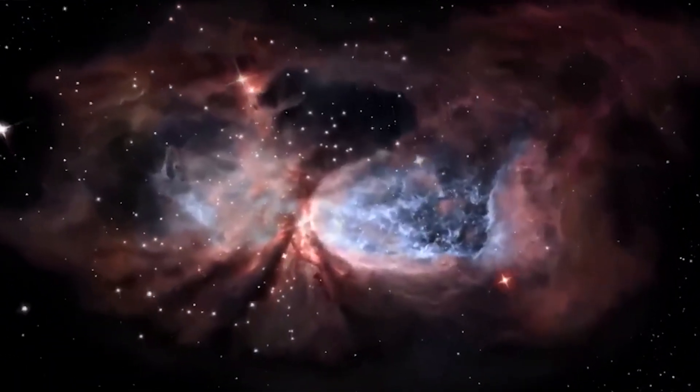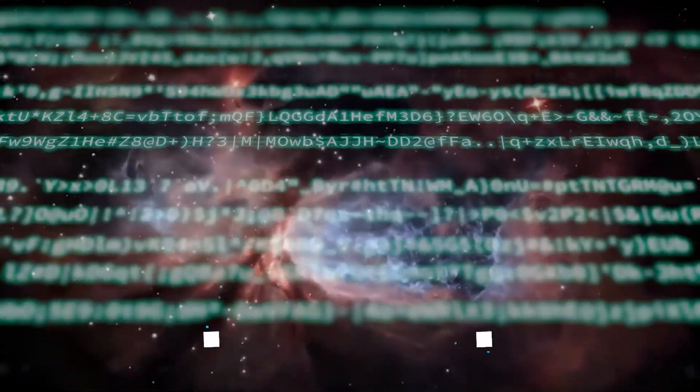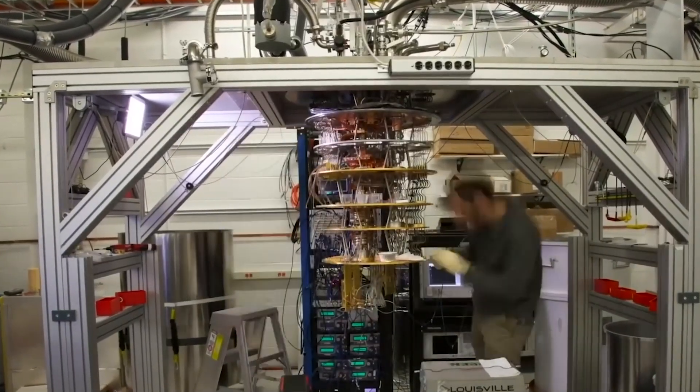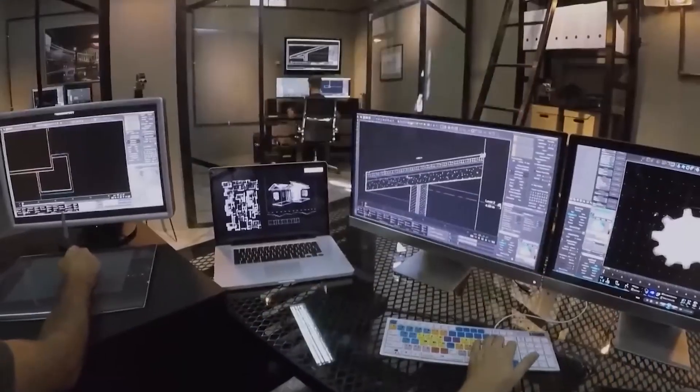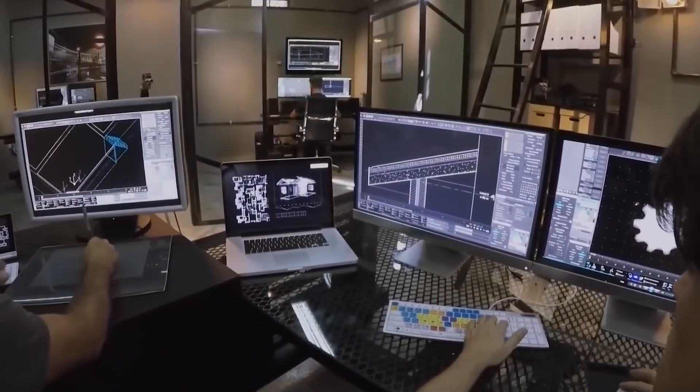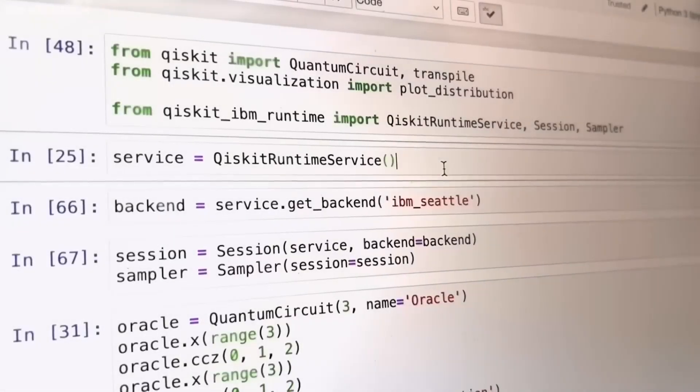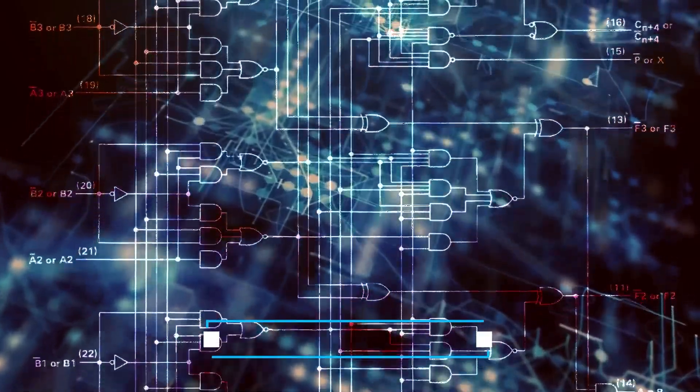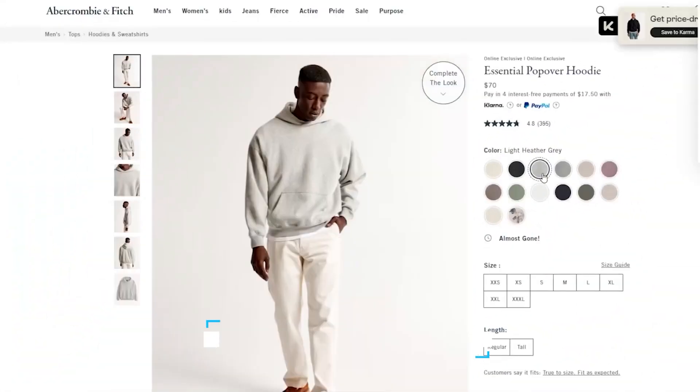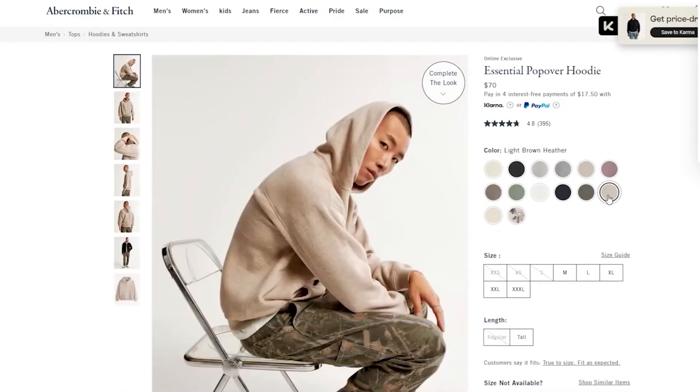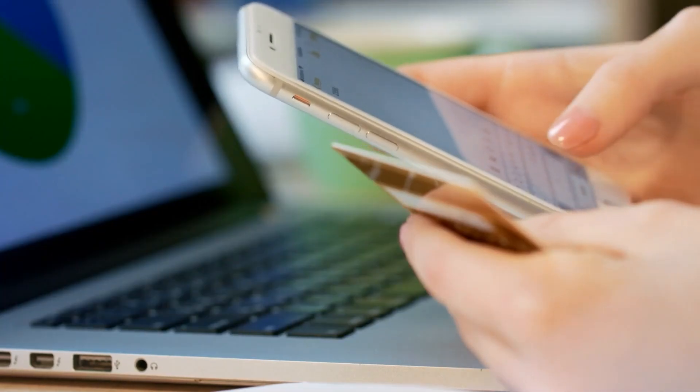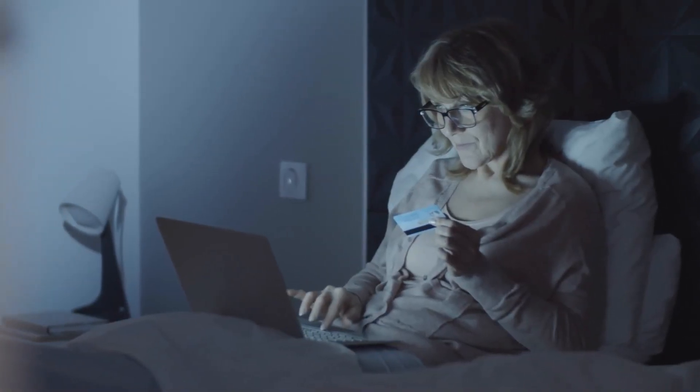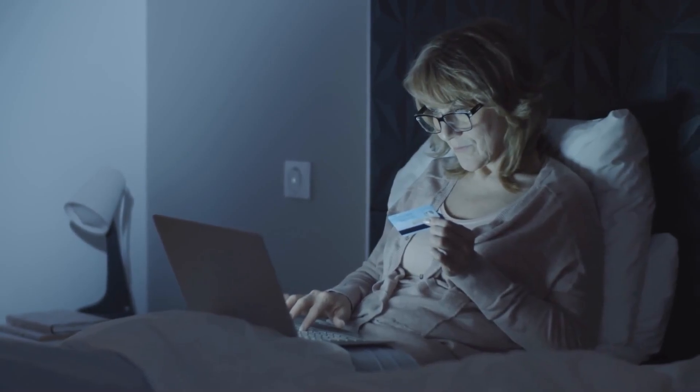For a regular computer, it would take longer than the age of the universe to factor a 300-digit number. A quantum computer could potentially break established digital codes. Now, you might be wondering why you should be concerned about a computer strategy that performs calculations much faster. The primary worry in your daily life is the RSA encryption system. Picture yourself buying a hoodie online. You've chosen it, placed it in your virtual cart, and are ready to check out, but you need to provide your credit card details. This is sensitive information, and you wouldn't want it to fall into the wrong hands.